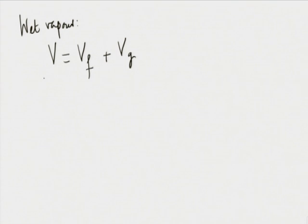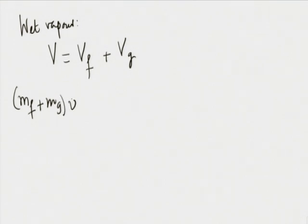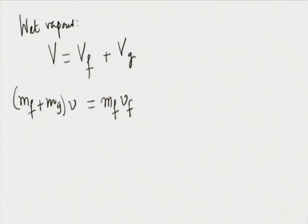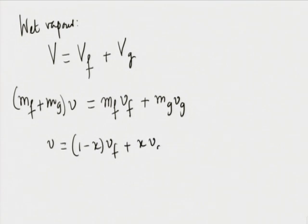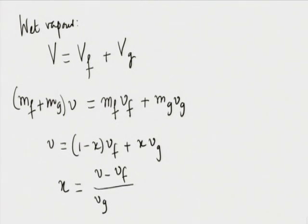For wet vapour, any extensive property like volume: the total specific volume V equals (Mf/total)·Vf plus (Mg/total)·Vg. Dividing through gives V equals (1 minus x)·Vf plus x·Vg. Solving for x gives x equals (V minus Vf) divided by (Vg minus Vf).